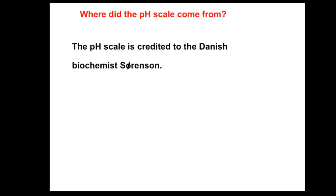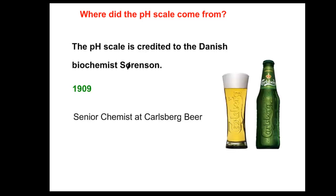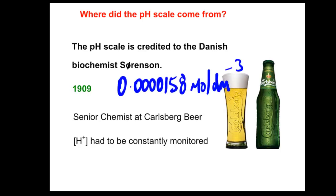Let's consider the origin of the pH scale and its purpose. The pH scale is credited to the Danish biochemist Sorensen. It dates back to 1909 when Sorensen was a senior chemist at Carlsberg Beer. The hydrogen ion concentration had to be kept constant and constantly monitored for the efficient brewing of beer.